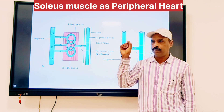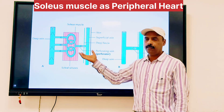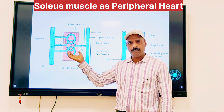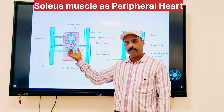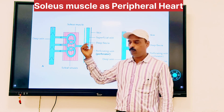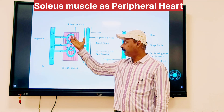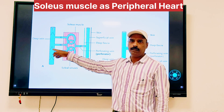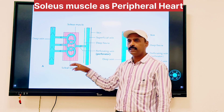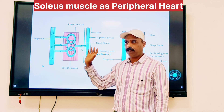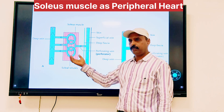A question may be asked as a short note on soleus — origin and insertion can be asked, and soleus as a peripheral heart can also be asked. When a soleus short note is asked, you have to explain the origin and insertion, then the action, and then explain why it is called a peripheral heart. The most important thing to remember is the soleal sinuses — they are present in the soleus muscle and have connections to the deeper vein. When soleus contracts, it pumps blood to the deeper vein. When it relaxes, the sinuses are refilled by venous blood from the superficial vein. This mechanism correlates to that of the heart.